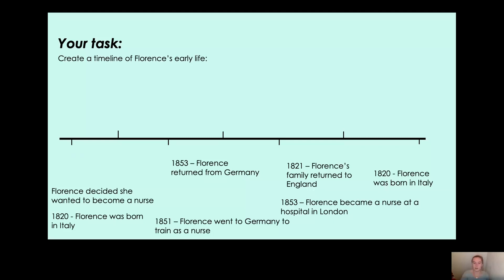Let's see if you were right. Yes — 1820, Florence was born in Italy. That is the first thing that happened in her life. Now I'm going to leave you to have a go at creating your own timeline, using the different events and putting them in the correct chronological order. When you finish, come back to the video. Pause the video now and have a go at your timeline.